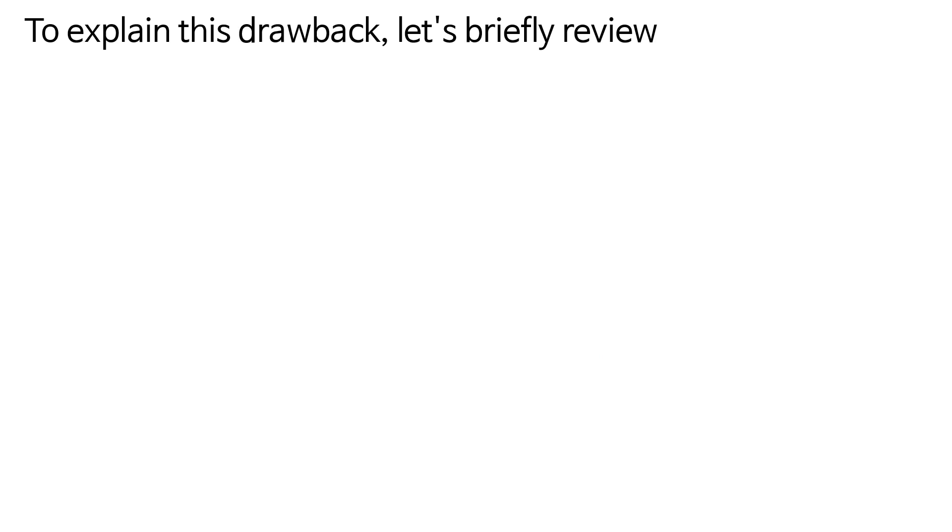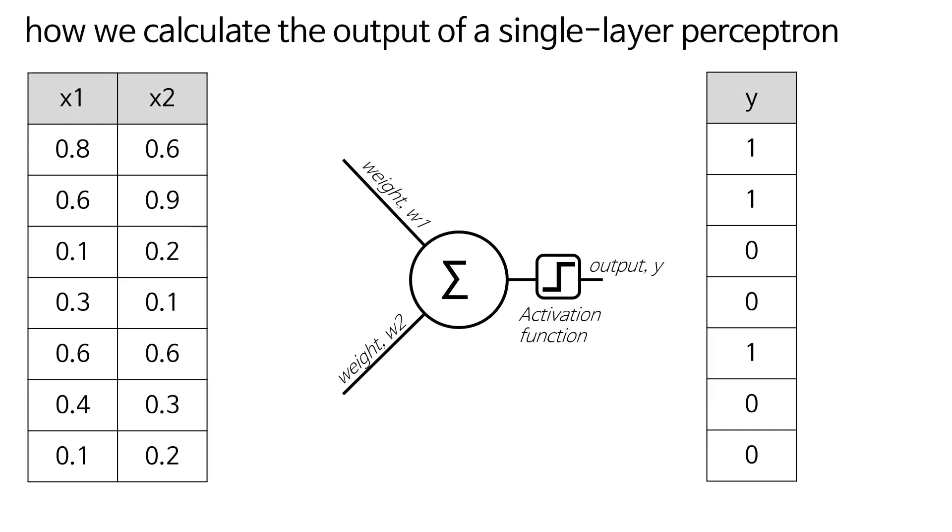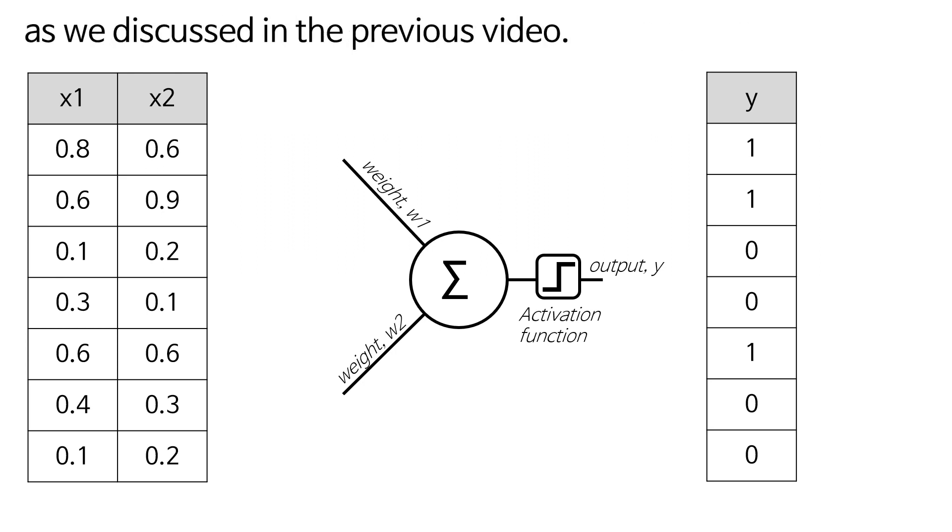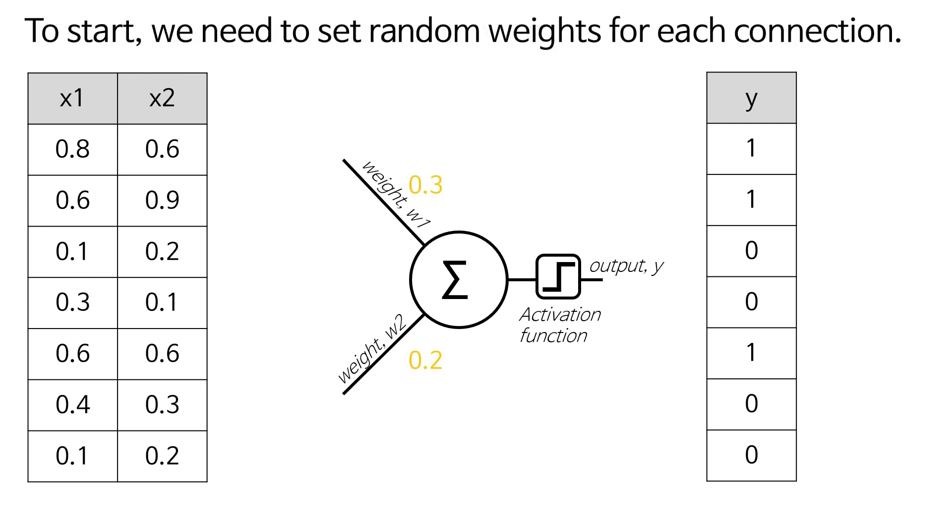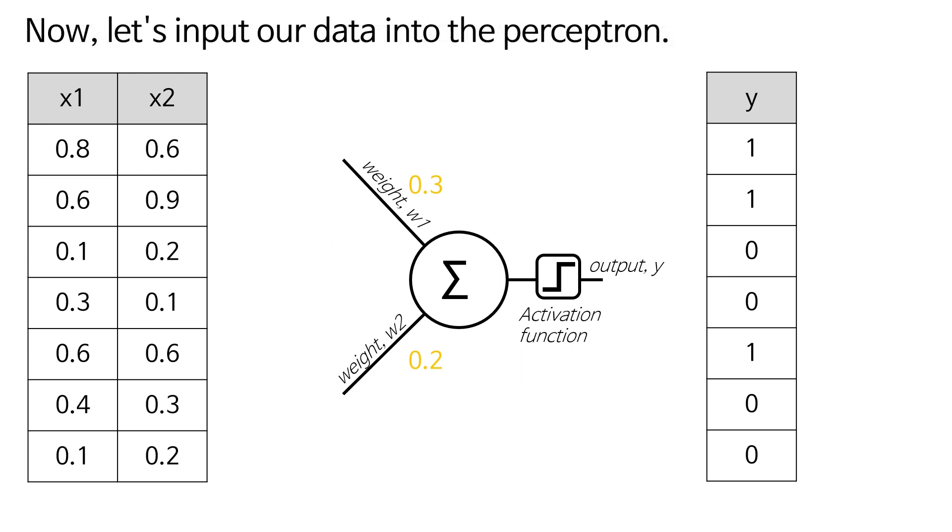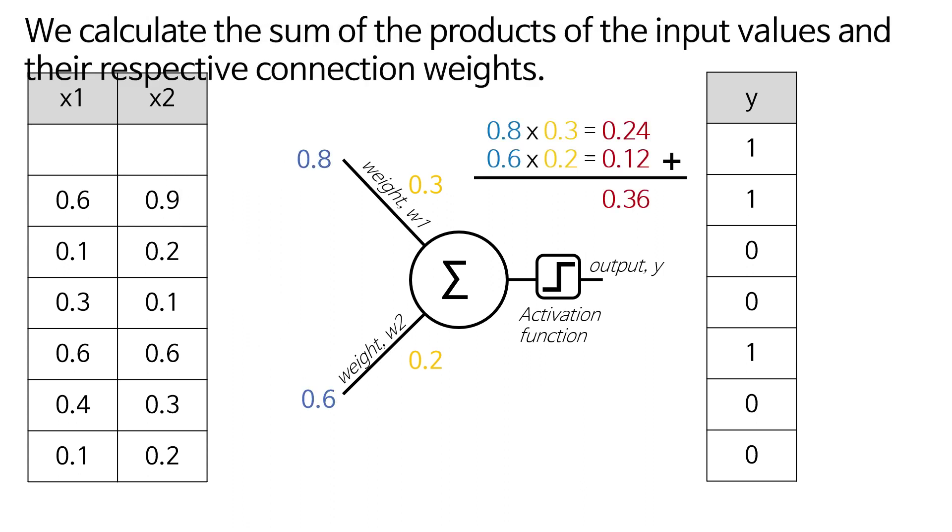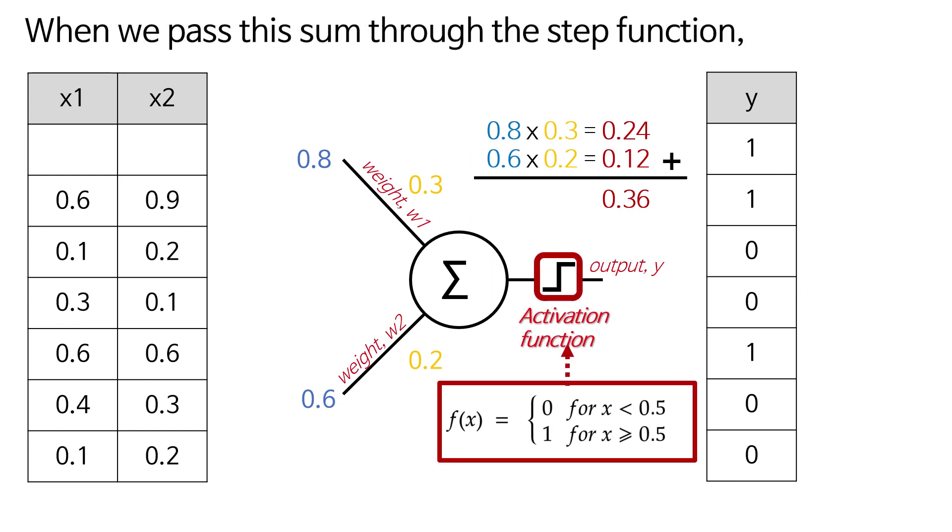To explain this drawback, let's briefly review how we calculate the output of a single layer perceptron. As we discussed in the previous video, to start we need to set random weights for each connection. Now let's input our data into the perceptron. We calculate the sum of the products of the input values and their respective connection weights. When we pass this sum through the step function, we get an output of zero.